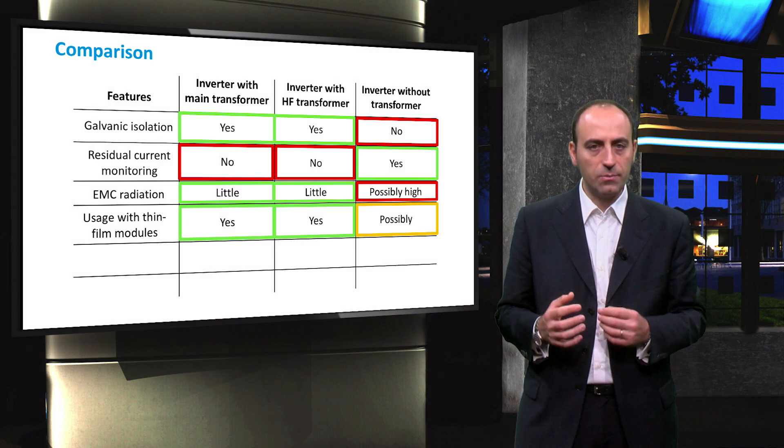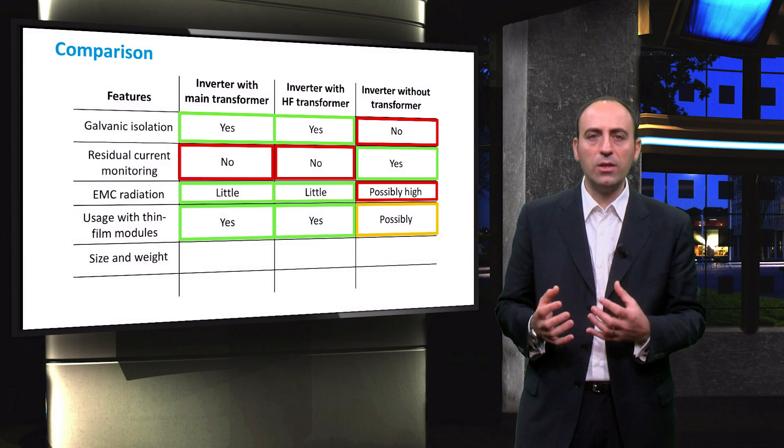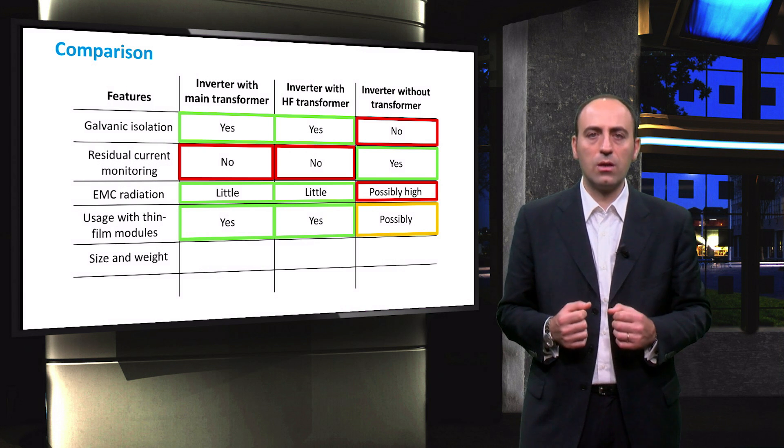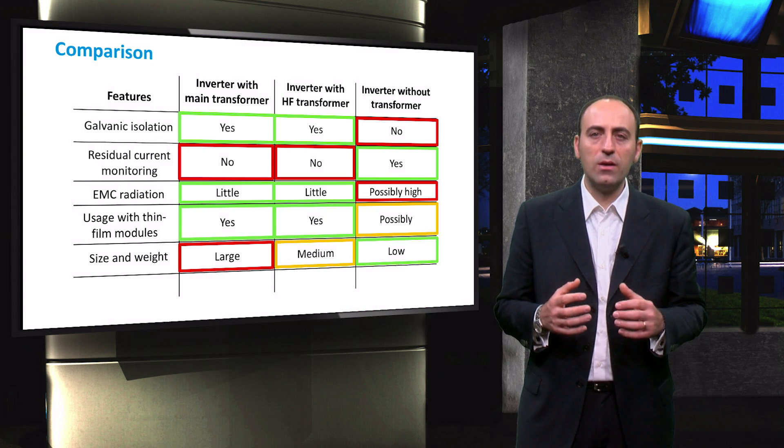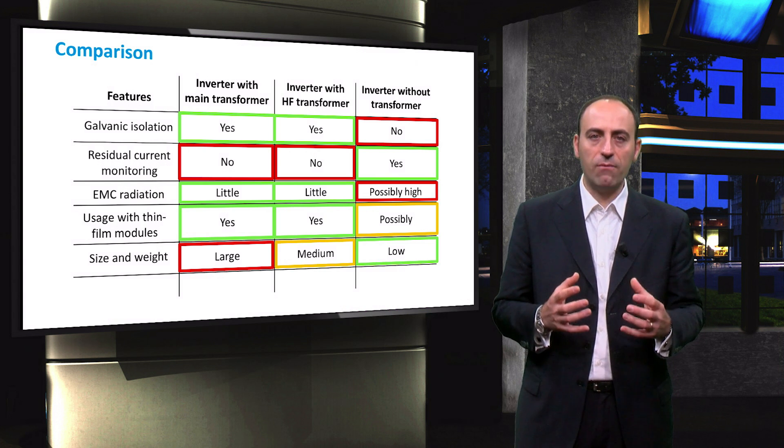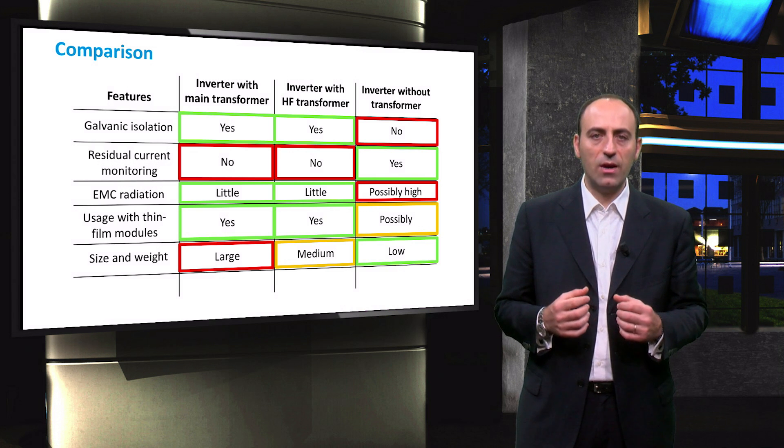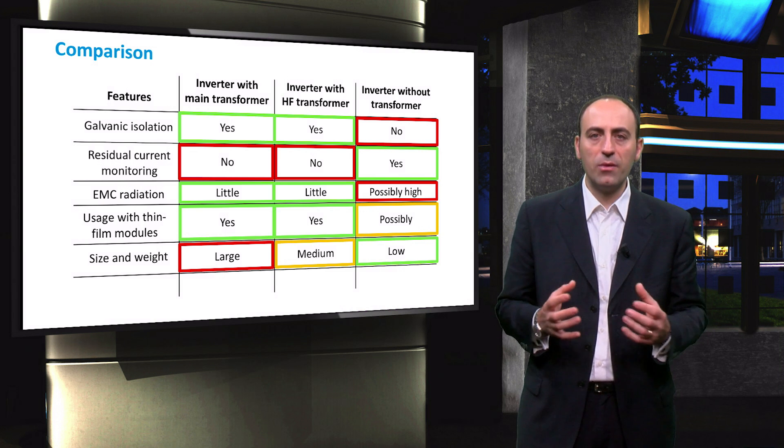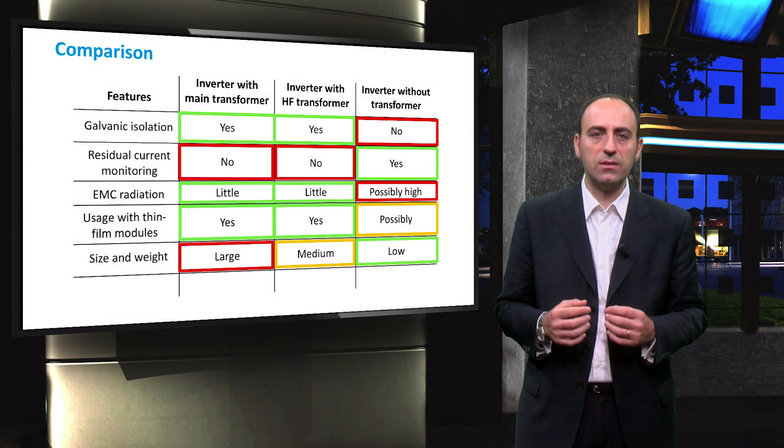Another crucial aspect, when a system design is performed, is the size and weight of the inverter, especially for stand-alone and rural applications. As we mentioned before, the main transformer is particularly bulky and heavy, while the high-frequency transformer is a smaller and lighter device. The transformerless inverter is clearly preferable if the PV system requires a lightweight and small-sized device.